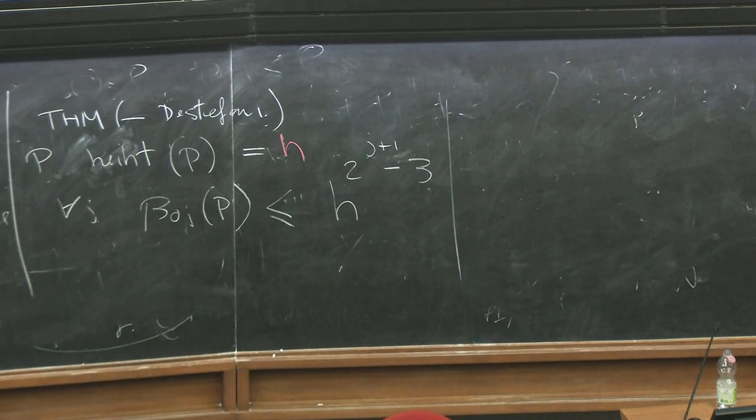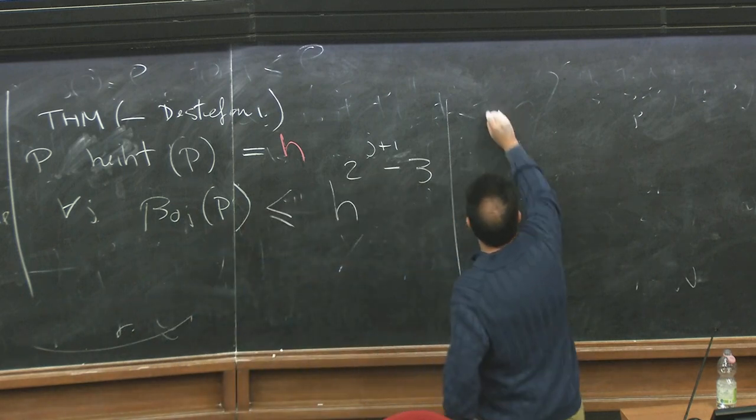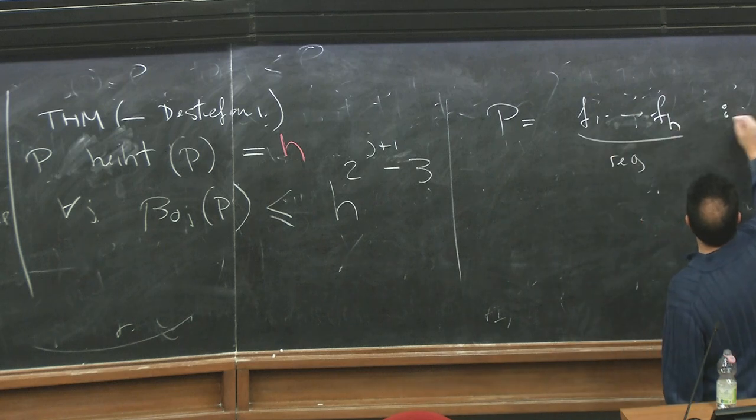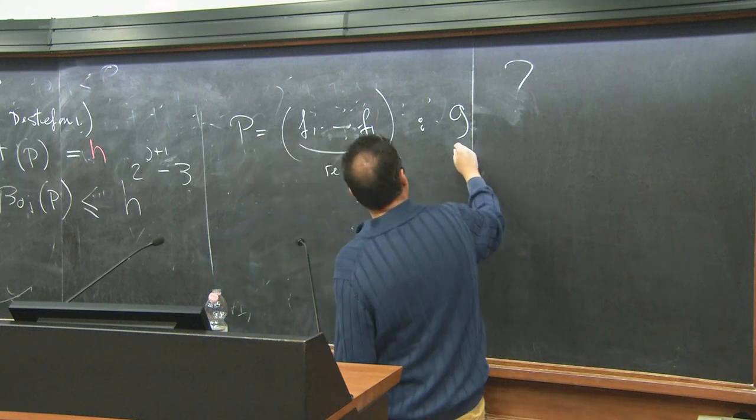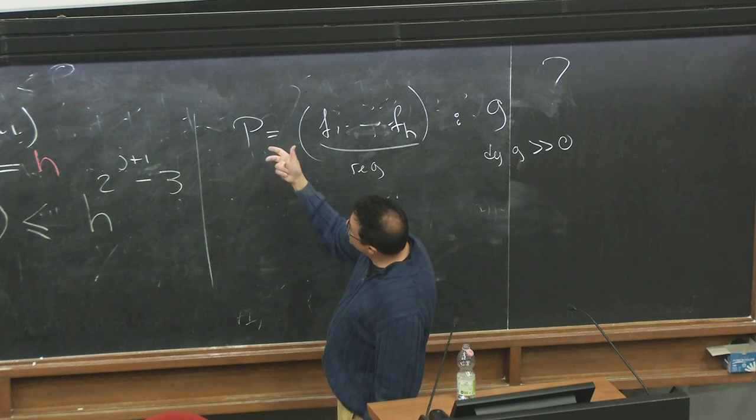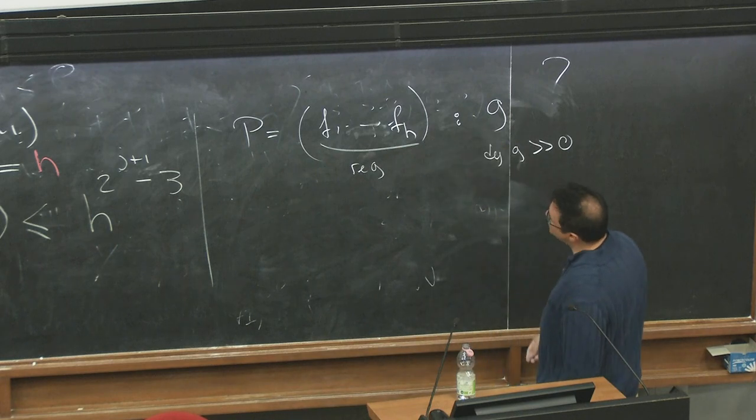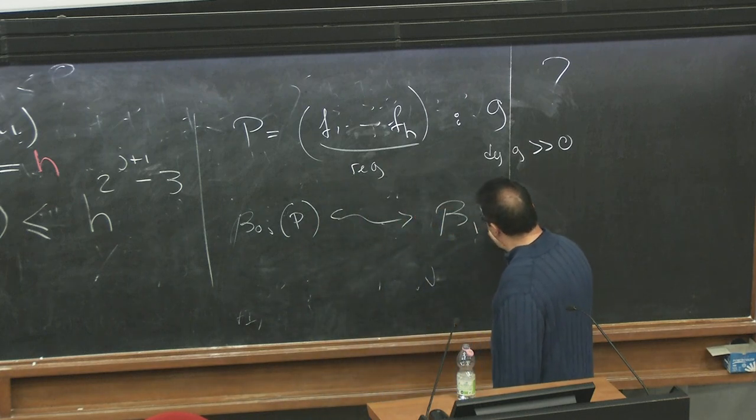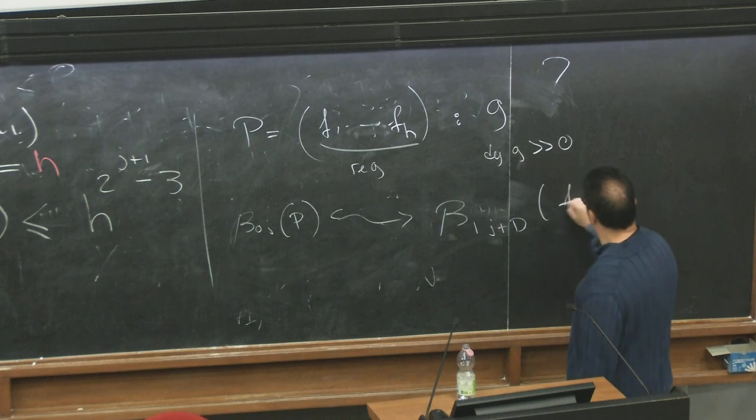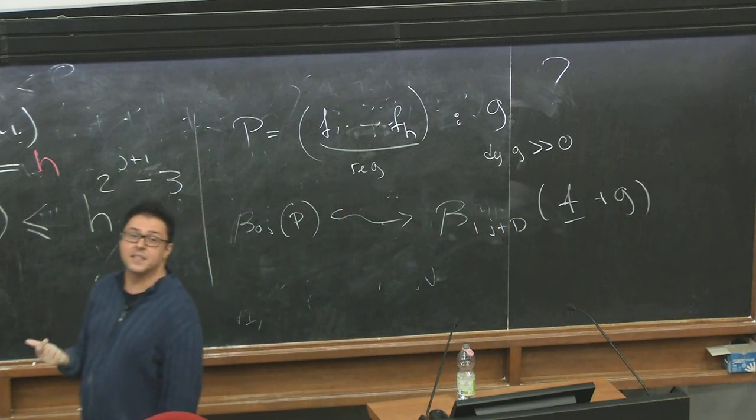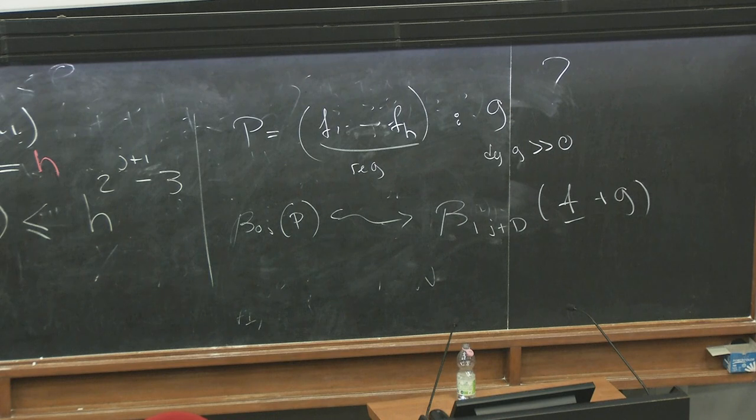What's the proof like? I just spent the last minute discussing the proof. Basically what you want to do, you care for—let me do the first step. You write your prime as a bunch of forms, as many as the height, this is your regular sequence in the prime, colon some g. You assume the degree of g is very high, and so instead of studying the generators of the prime, you basically end up studying, so the B_0j of P corresponds to studying the B_1,j+d of F1, ..., Fh, g, of this almost complete intersection. How do you study a first syzygy? Gröbner basis, Schreier's theorem.